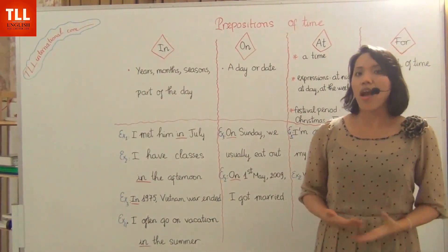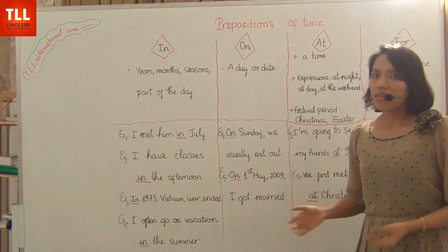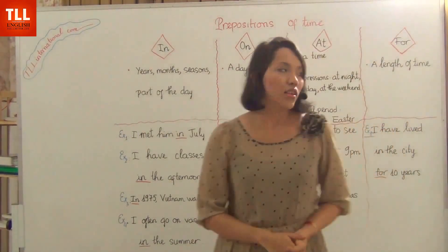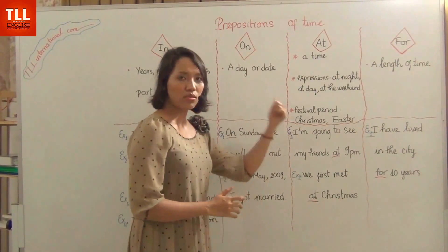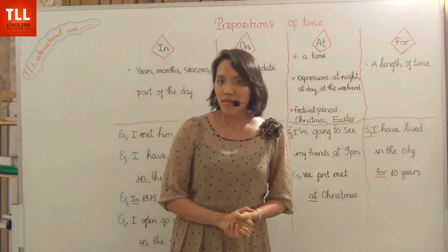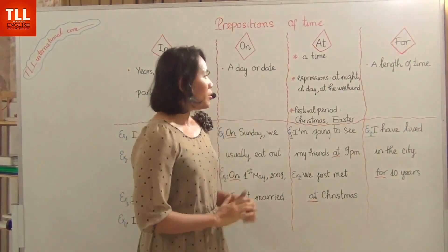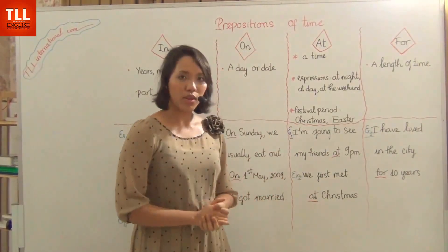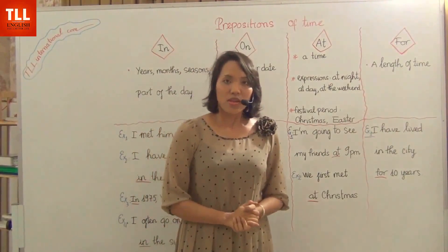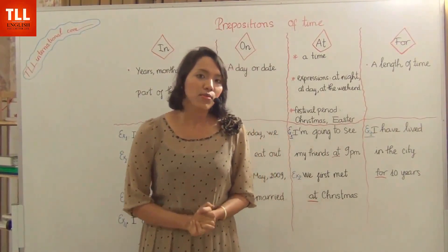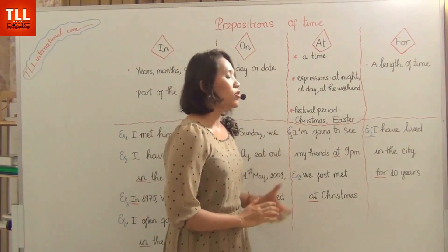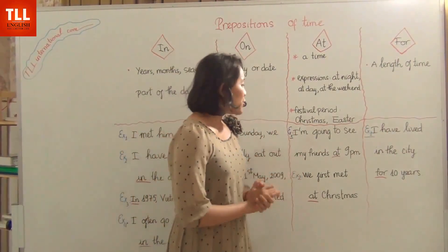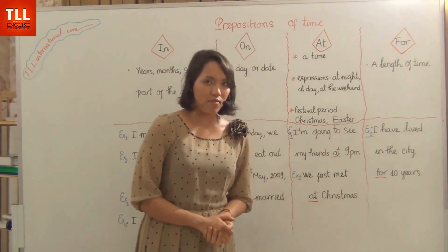The third preposition is 'at'. We use 'at' before a specific time, like 5 p.m. or 7 p.m., and also before common expressions like 'at night', 'at midday', or 'at the weekend', and before festival periods like Christmas or Easter. For example: 'I'm going to see my friends at 9 p.m.', 'at the weekend', 'we first met at Christmas', or 'at Easter'.